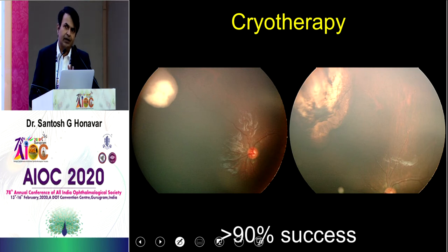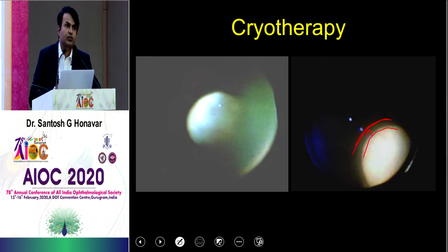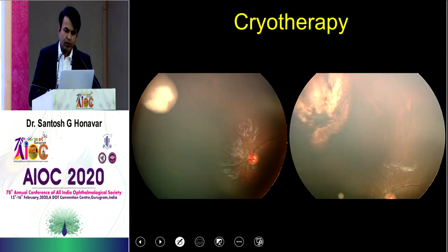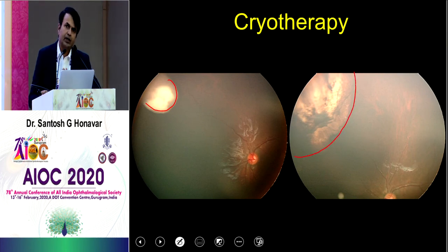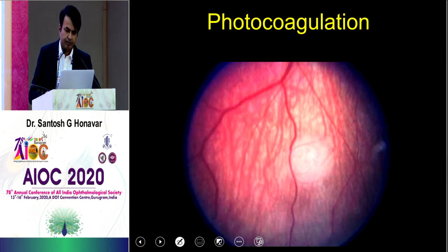We avoid cryotherapy temporally — even if anterior to the equator it may cause dragging of the macula. Cryotherapy is triple freeze-thaw, including not just the tumor but also the vitreous on top — that's how aggressive it is. The resulting scar is much larger than the tumor, so you never want to do it in equatorial tumor, especially on the temporal side. Multiple sessions can lead to retinal breaks, and heavy cryo can lead to amaurosis fugax or exudative retinal detachment.